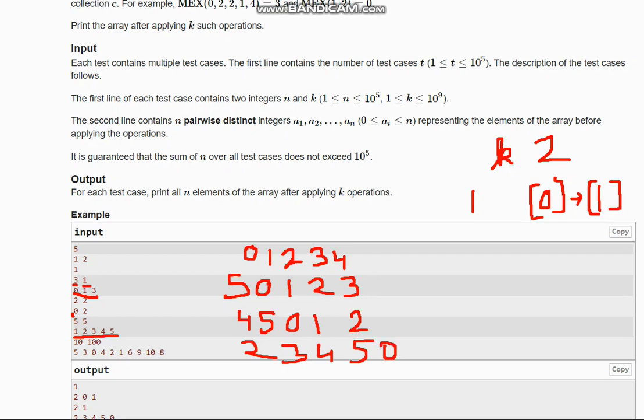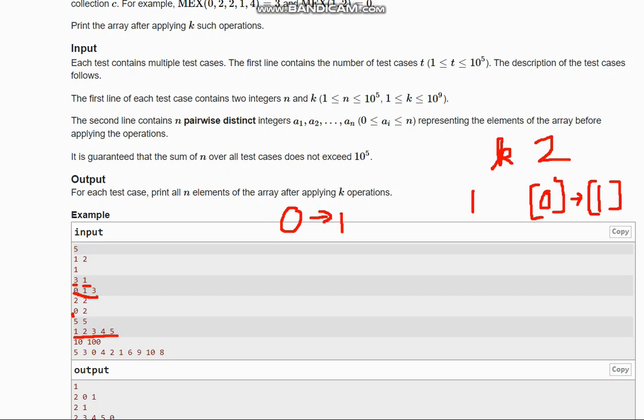Now how to do all this? First, what we need to do is we need to search which element is not present from 0 to n in this list. When we start iterating, we will start from 0 so that we will get the minimum element which is not present.